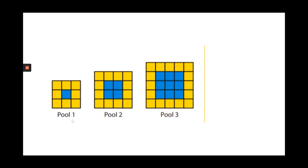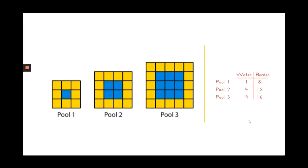So the yellow tiles represent a pool deck — the outside cement area where you can sit — and the inside tile represents the water. We have pool one, pool two, and pool three. Let's keep track of some things in a t-chart. For pool one, there was one water tile and eight border tiles. For pool two, there were four water tiles and 12 border tiles. Pool three had nine water tiles and 16 border tiles. What do you think will happen with pool four and five? Can you sketch them out? How many water tiles and how many border tiles would be in pools four and five?